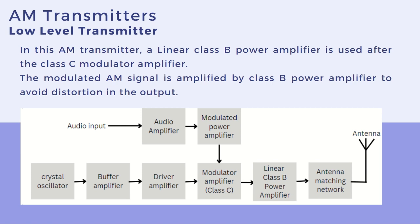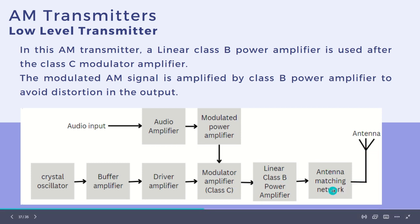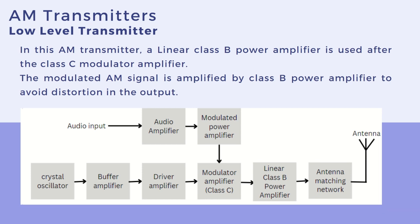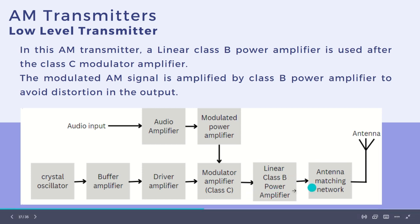The linear class B power amplifier performs the major power amplification and feeds the amplified signal to the antenna. In this block diagram, the modulator amplifier performs modulation at relatively low power levels, which is why it is called a low-level modulator AM transmitter.